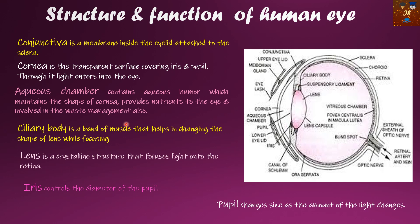Next comes the ciliary body, a band of muscle that helps in changing the shape of the lens while focusing — you can see the ciliary muscles on both sides. The lens is a crystalline structure that focuses light onto the retina. The iris controls the diameter of the pupil. The pupil changes its size according to the amount of light. These are all the structures and functions of the human eye.